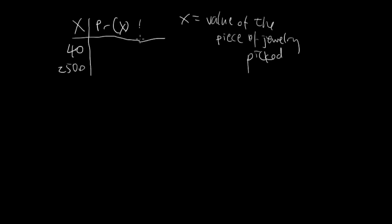The probability of x is pretty straightforward. There are four pieces of these, so here's four-fifths, and one piece of the $2500, so it's one-fifth.